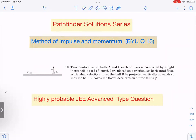And now let us see what is the question. The question is there are two identical small balls A and B, mass M, connected by a light inextensible string of length L. They are placed on the frictionless horizontal floor. With what velocity U must the ball B be projected vertically upward so that the ball A leaves the floor? Acceleration of free fall is g.